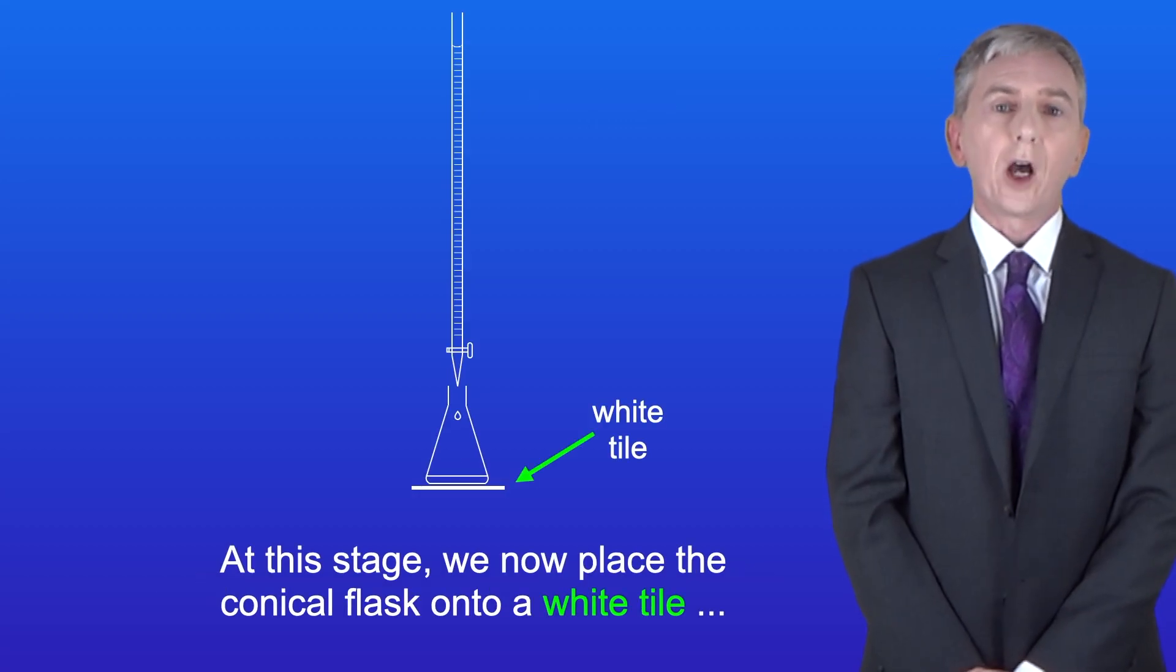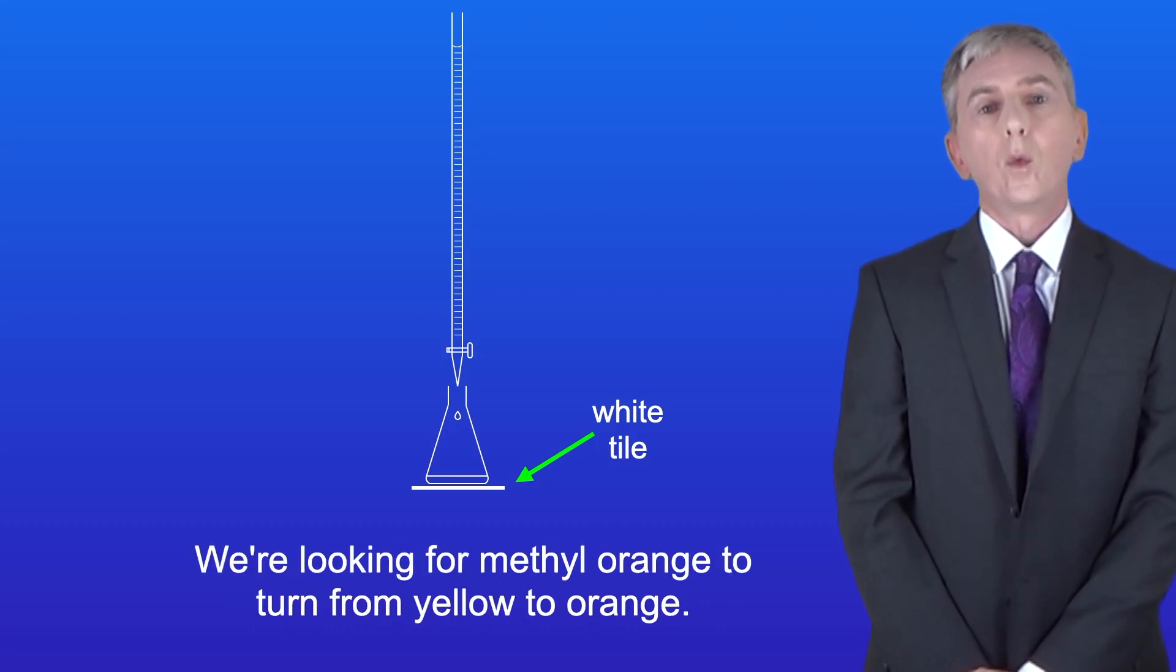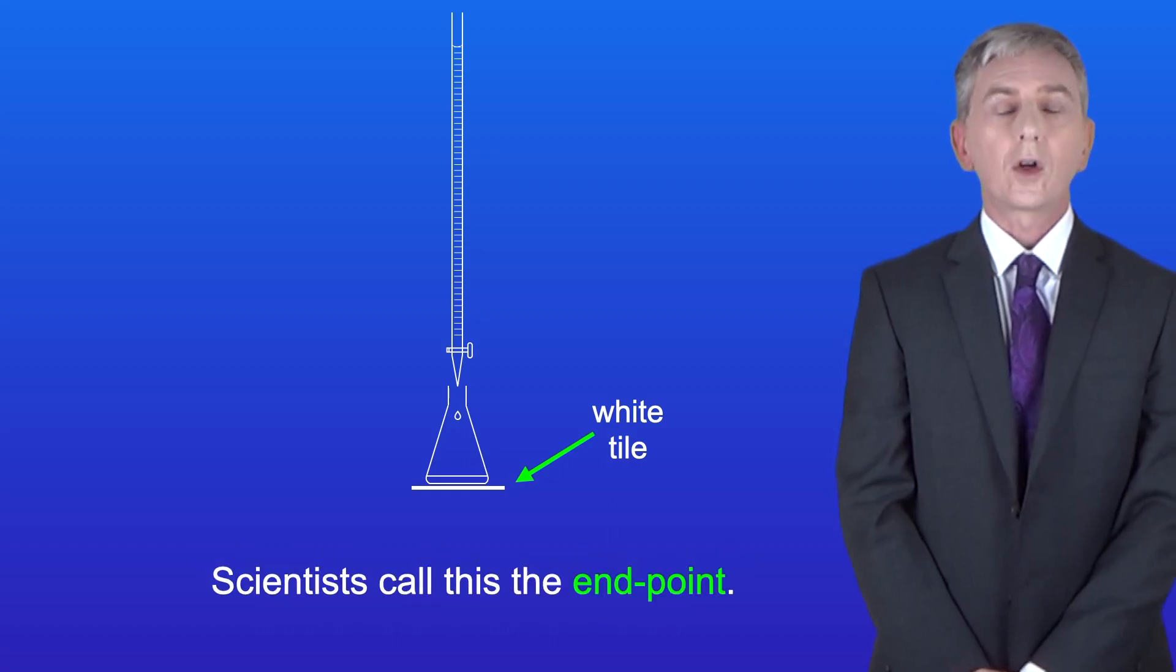At this stage, we now place the conical flask onto a white tile and gradually add hydrochloric acid while swirling our solution. We're looking for methyl orange to turn from yellow to orange. Scientists call this the end point.